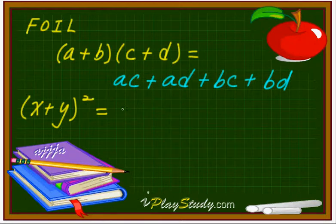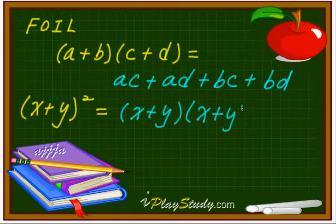Square right here means just like this one. I'm going to rewrite. x plus y times x plus y. That's it. So now, we're going to use the foil technique. The first one, first one. x times x. x squared.